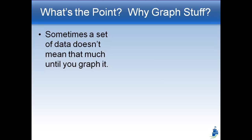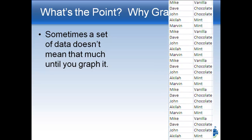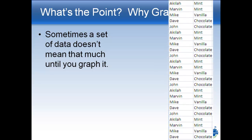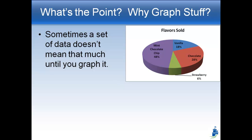For example, let's say you're running an ice cream stand at the basketball games. You want to know which flavors you should make the most of and buy the most of. You can look at a giant list of everybody and all the different ice creams they chose, but that list doesn't mean very much. But if you turn it into a graph, you can see that you're selling a lot of mint chocolate chip and not much strawberry — so maybe stop buying strawberry and buy more mint chocolate chip. A big list of numbers can't tell you much, but when we graph them, we can learn a lot.